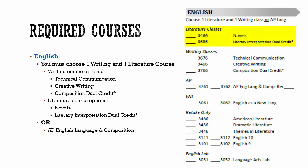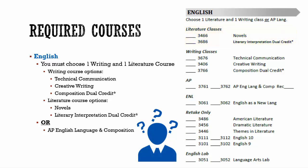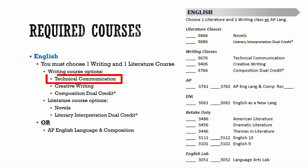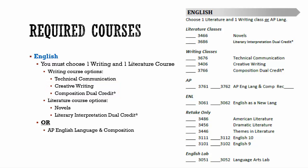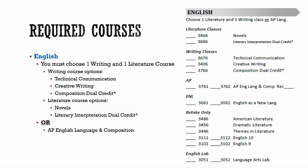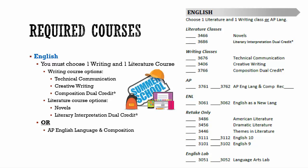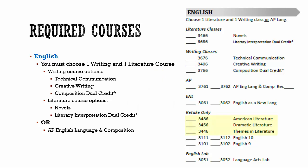Options for literature include novels or literary interpretation dual credit. Technical communication would be good for students who are not planning to attend college after high school. Creative writing or composition dual credit would be good choices for students going on to college. If you choose composition dual credit, you must earn dual credit for this class — it is no longer optional. Literary interpretation dual credit is a new class and a good option for college-bound students, but check with the admissions office of the college you're considering to see if the dual credit will transfer. If you failed English 11 and need to retake it, we recommend retaking it in summer school if possible; otherwise, select the semester(s) of English 11 you failed on your senior year course selection sheet along with your senior year English courses.